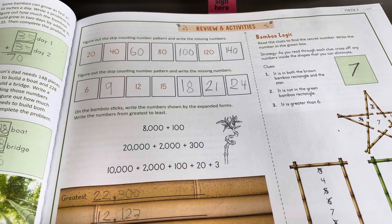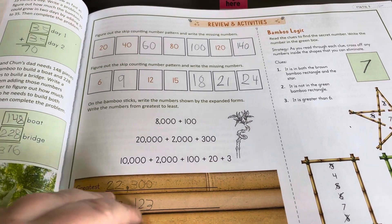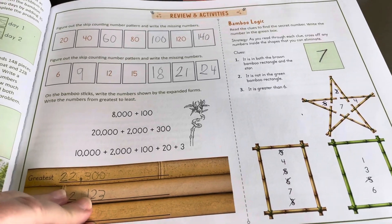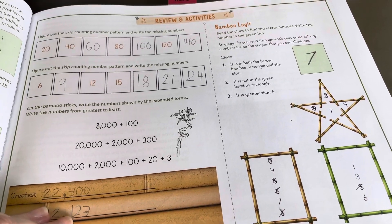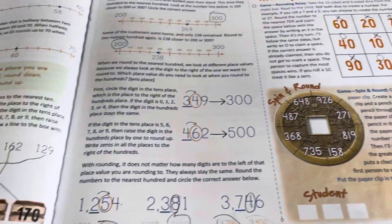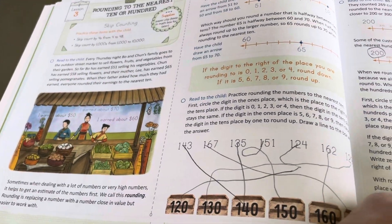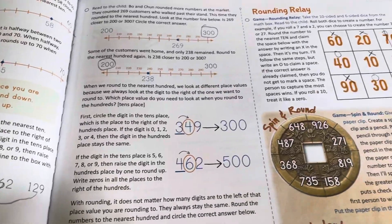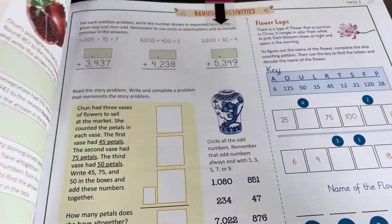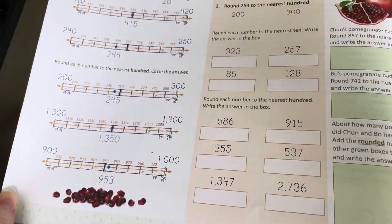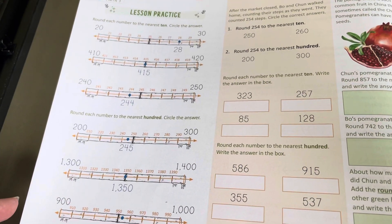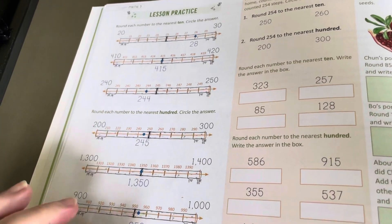And then we have review and activities. He could not do this independently because I had to help him figure out the logic puzzle. And here's lesson three, rounding.